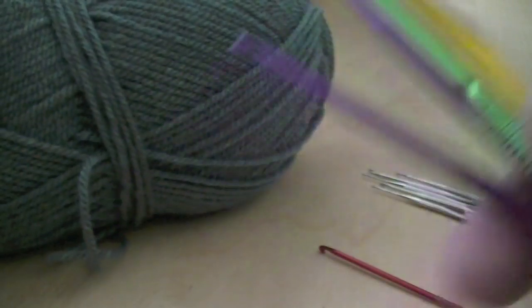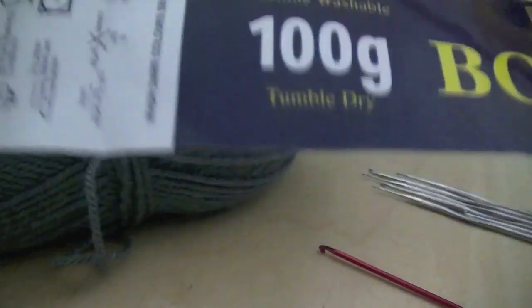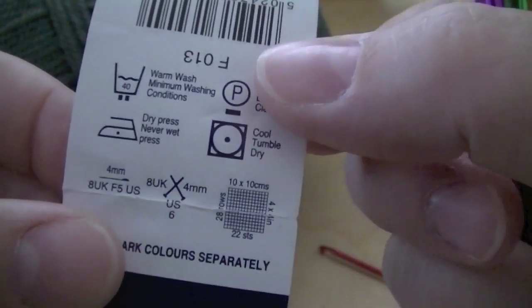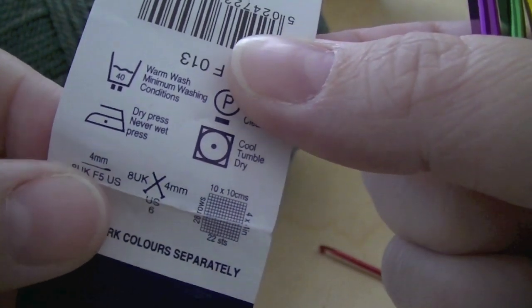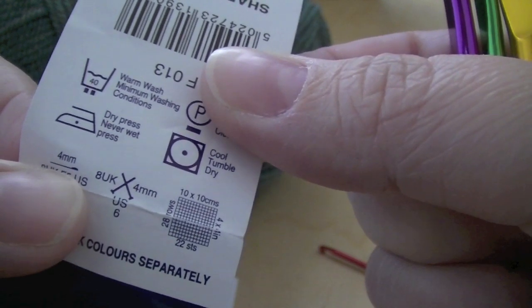And this yarn here has a piece of paper wrap around it which is always essential, it's not just to keep it tidy. This will tell you what size needles and crochet hooks you need to use. So this one here is telling me 4mm crochet hook, a little picture of a crochet hook.